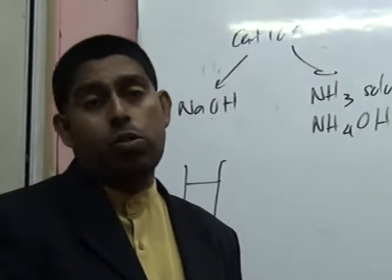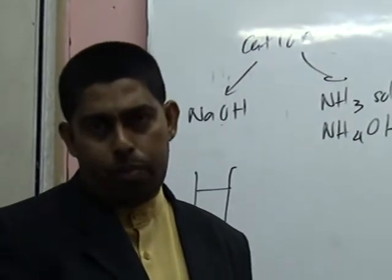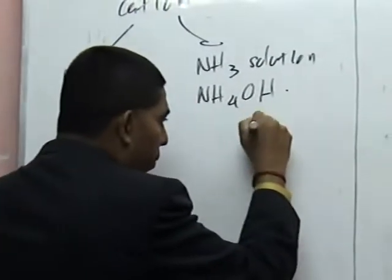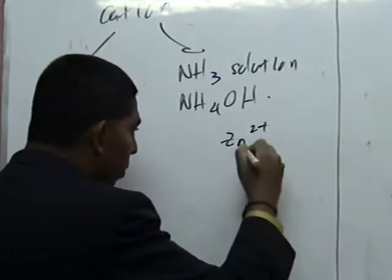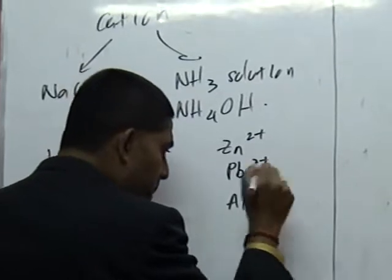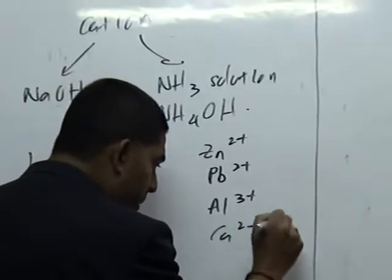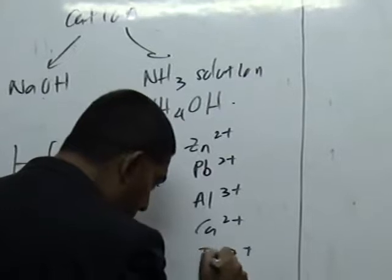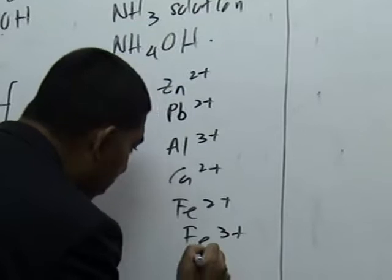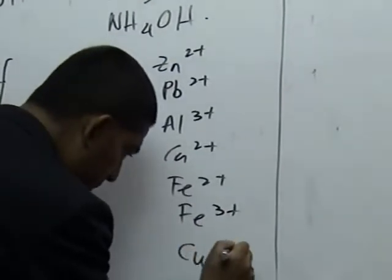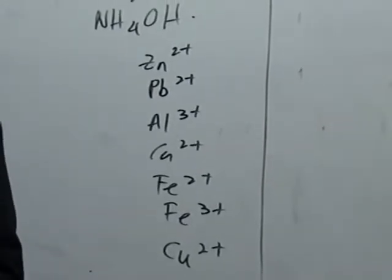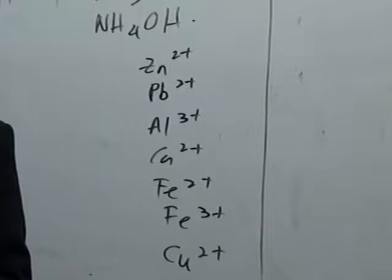Only certain cations are tested in your examination. Those cations that you need to know would be: zinc, lead, aluminum, calcium, iron(II) (ferrum-2), iron(III) (ferrum-3), and copper. These are the ones which will be tested in your exam.